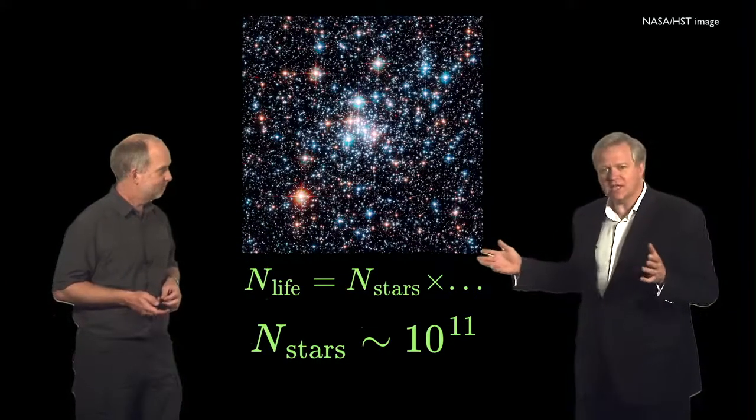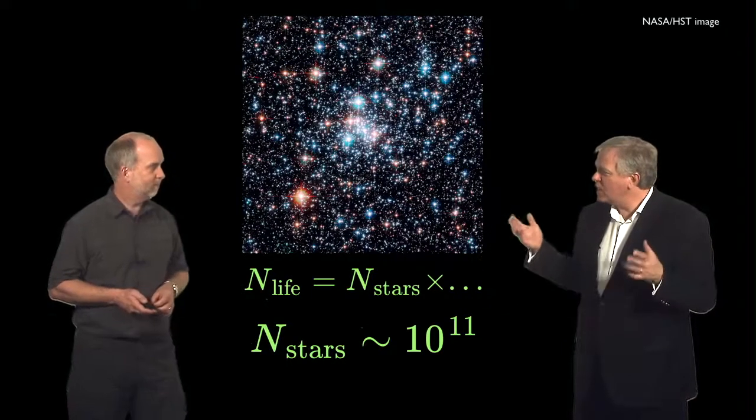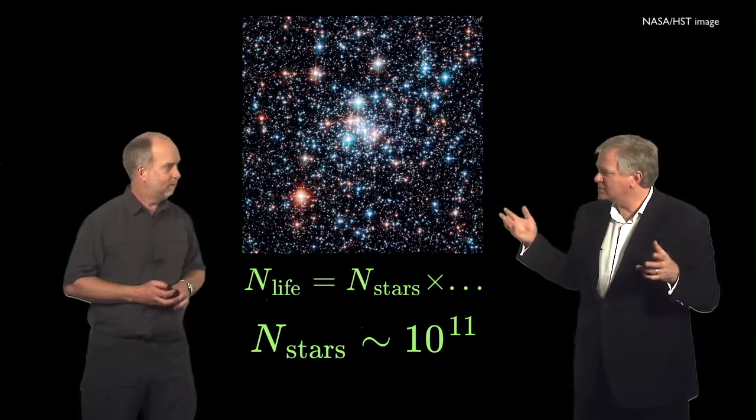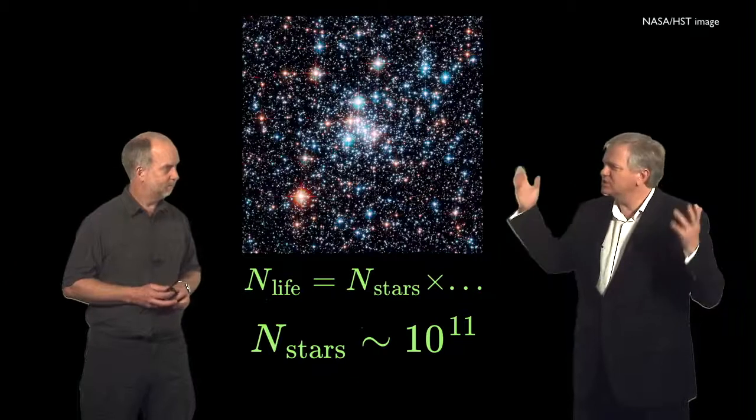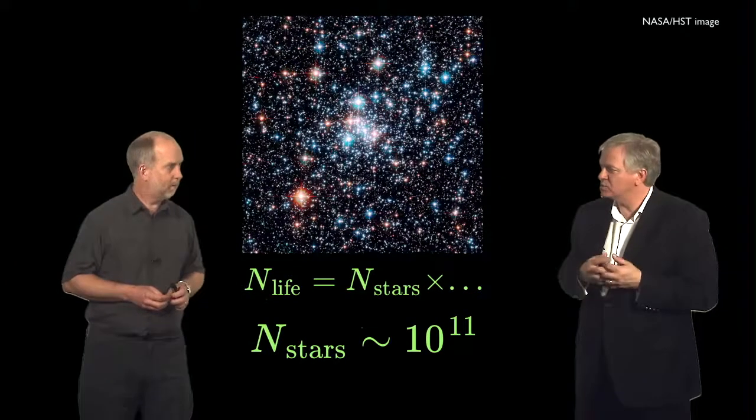So there's 10 to the 11 stars in our own Milky Way, and our Milky Way is only one of a tremendous number of galaxies. I mean, there are hundreds of billions of galaxies out beyond the Milky Way that we can see with telescopes here on Earth.